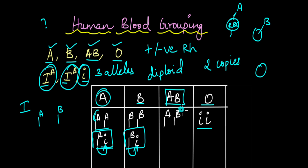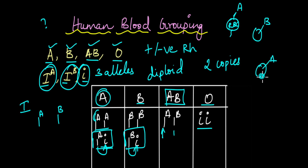So the example of codominance in human blood grouping is the AB blood group. AB blood group occurs when the genotype is IA and IB. Since both are equally dominant, both glycoproteins are expressed on the cell surface of the RBCs in the case of the AB blood grouping system.